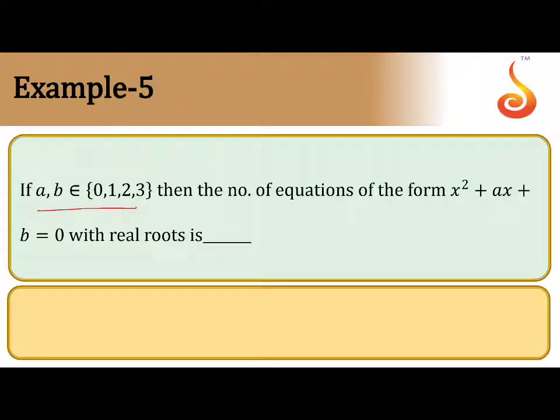If a, b belongs to {0, 1, 2, 3}, then the number of equations of the form x² + ax + b = 0 with real roots is...